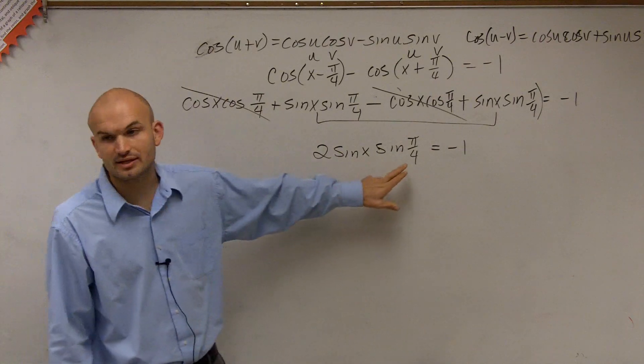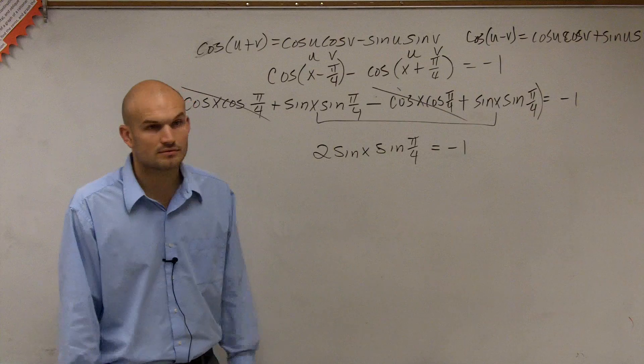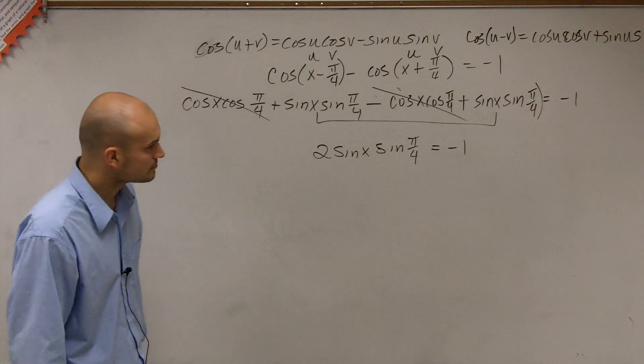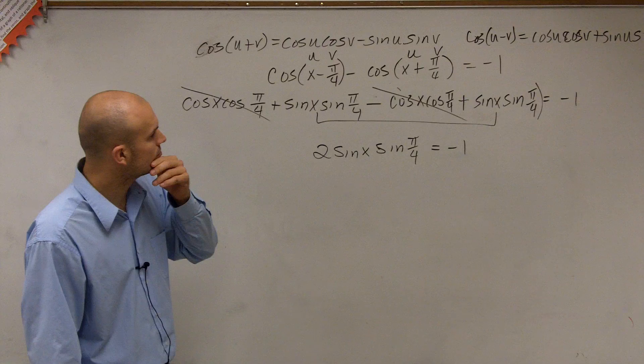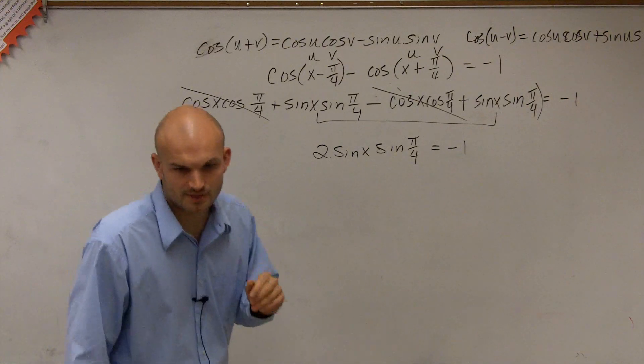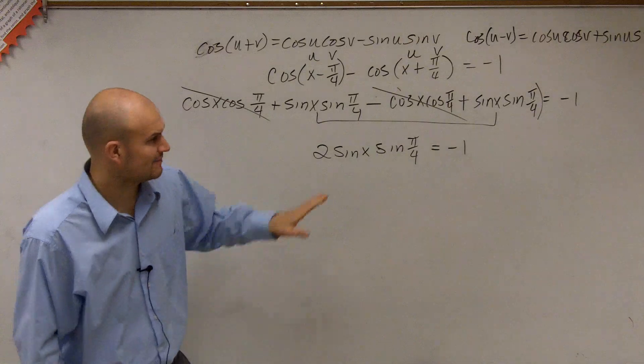So we could say 2 sine of x times sine of pi over 4 equals negative 1. OK. So now we look at sine of pi over 4, and we say, all right, how are we going to evaluate for the sine of pi over 4? Wait a minute. What does this question ask? This actually says, it doesn't say verify. I'm sorry. We have to solve. OK.